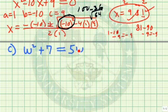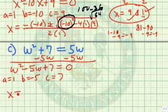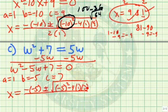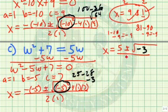Continuing here: w squared plus 7 equals 5w. We want to get a 0 on the right, so let's subtract 5w from both sides. Writing in standard form makes it easier to find the values of a, b, and c. So a equals 1, b equals negative 5, and c equals 7. Substituting into the quadratic formula: x equals negative of negative 5 — so x equals 5 — plus or minus the square root of 5 squared which is 25, minus 4 times 1 times 7 which is 28, leaving negative 3, all divided by 2.